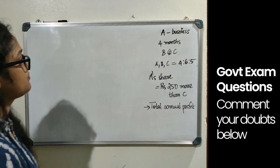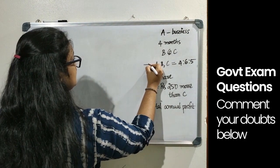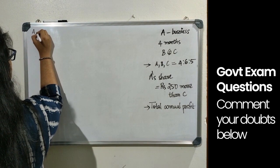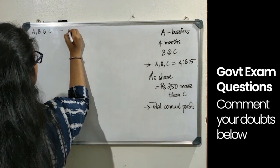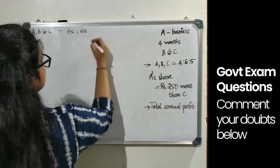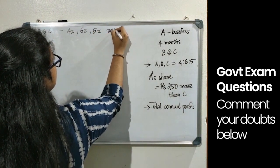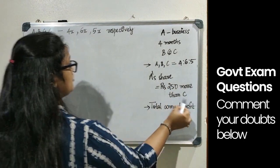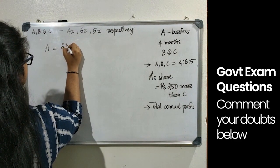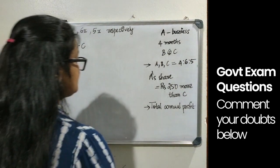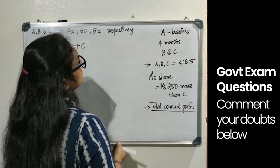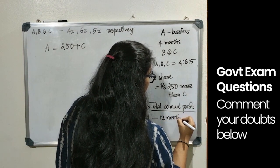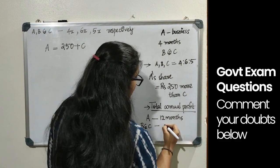So this is the question. Here it is given that A, B and C invested in the ratio of 4:6:5. So let's say the investment of A, B and C is 4x, 6x and 5x respectively. It is also given that A's share is Rs.250 more than C's, which means A equals 250 plus C. We know that A invested for 12 months and B and C invested for 8 months.